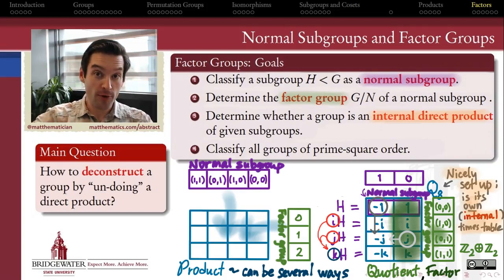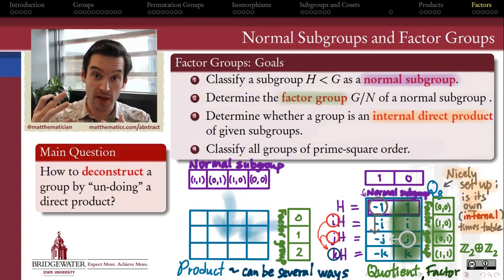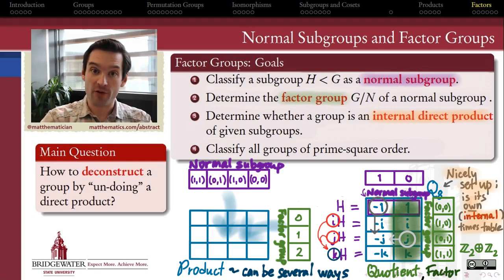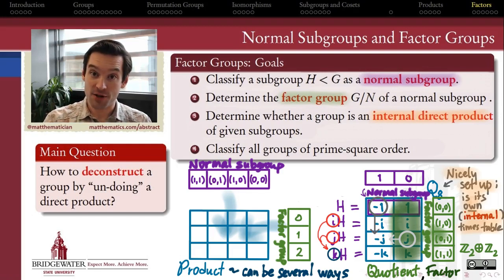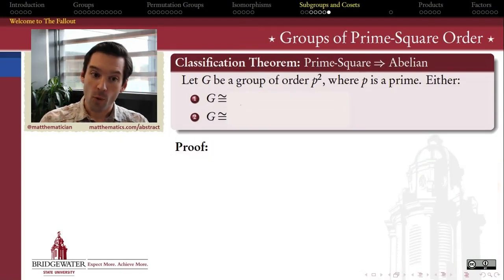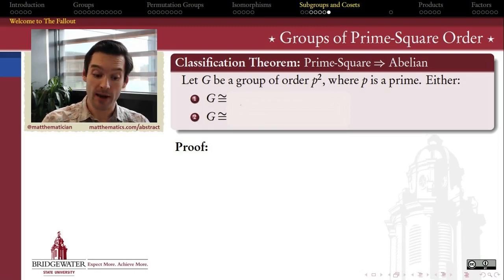Now that we've centered normal subgroups as the kinds of building blocks that we can make groups out of, and factor groups as a way of breaking apart a group along one of its normal subgroups into a group of cosets, we have all the tools we need to do a classification of all groups in the universe whose order is the square of a prime number. So, what can groups whose order is the square of a prime number look like?